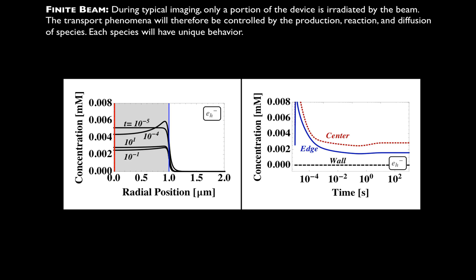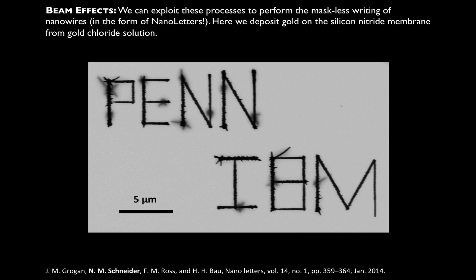One thing I wanted to point out is that we can now exploit these different properties — we know we can either cause etching or growth. We also know that hydrated electrons don't persist too far outside the beam. We see on the right a new graph showing the time evolution at the middle of the beam, the edge of the beam, and the far wall. We always stay at essentially zero concentration at the wall. Grogan et al. exploited this and were able to write the names of Penn and IBM using just a pure gold chloride solution and the beam. In STEM, zooming in increases the dose rate because you take into account the area over which you're depositing energy — and we were able to zoom in and draw lines to get patterned nanowires. You can imagine extending this to other systems depending on what type of crystals you want to grow.